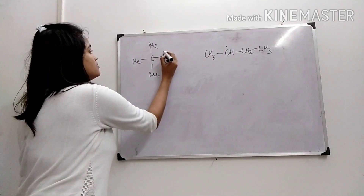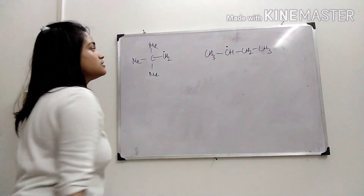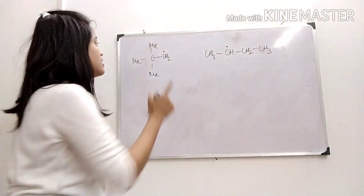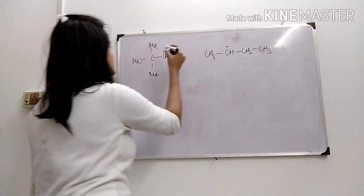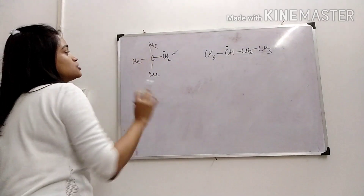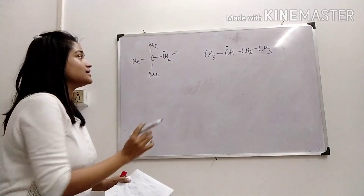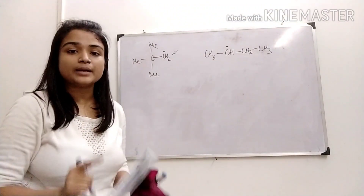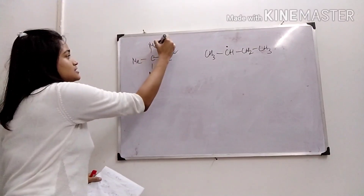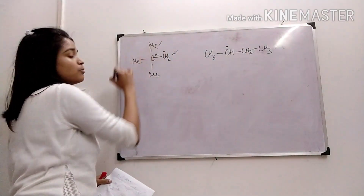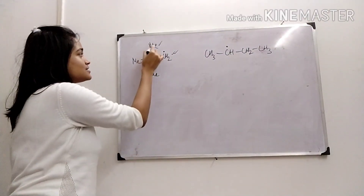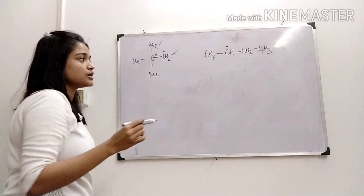You have to say which one is the more stable radical. We determine this by inductive effect or hyperconjugation effect. This radical is attached to a carbon atom which has no hydrogen. Hyperconjugation will only take place if the alpha carbon has hydrogen in it. This alpha carbon has a methyl group, so there is a lack of hydrogen and it cannot take part in hyperconjugation.